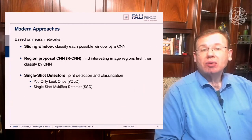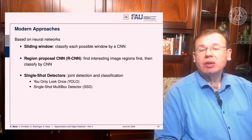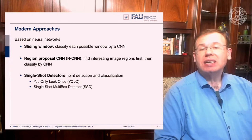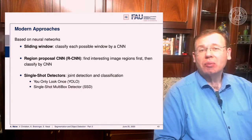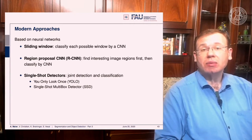There are also neural network based approaches. You can do this quite easily with a pre-trained CNN using the sliding window approach, detecting each possible window with a CNN. There are region proposal CNNs like RCNN that find interesting image regions first and then classify them, and there are single shot detectors that do joint detection and classification. One of the most famous examples is YOLO — You Only Look Once — which performs detection in real time.